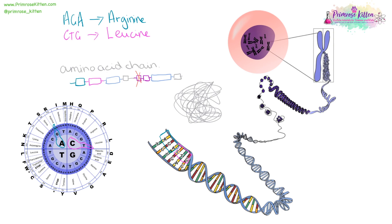There is a massive amount of DNA in each of our cells, and only some of it is useful. Some sections might be non-coding, which basically means it's like junk DNA — just getting in the way.